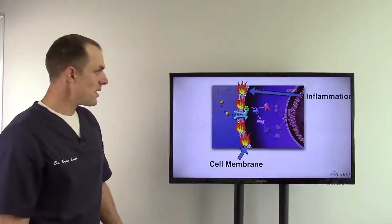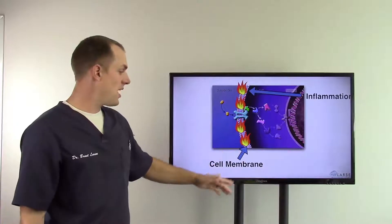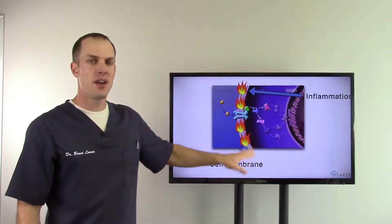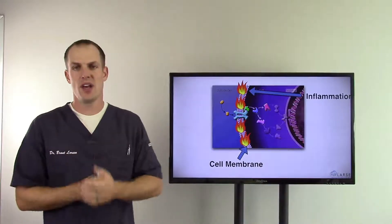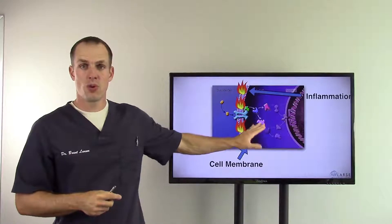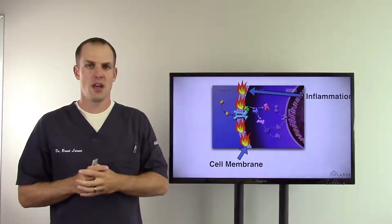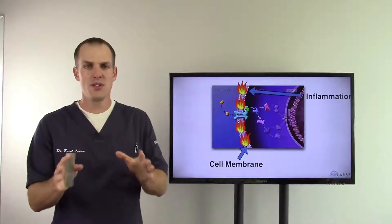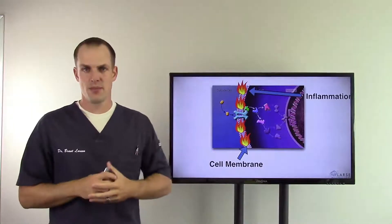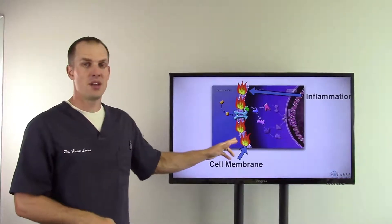But what happens if this cell membrane gets inflamed? What happens now? We have chronic inflammation of this cell membrane. Now I have a special test that I do in my office. It measures the cell membrane for inflammation. It's 50 times more accurate than a blood test. And I can tell you without a shadow of a doubt, the vast majority of people - ninety-some percent that come into my office - chronically inflamed cell membranes.